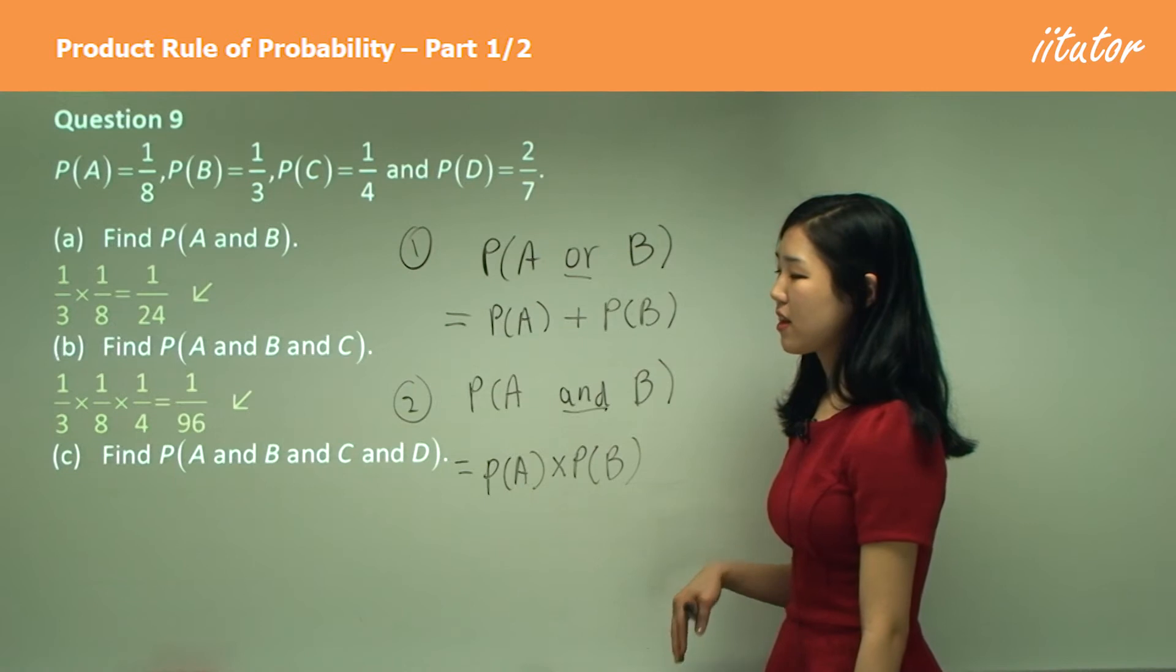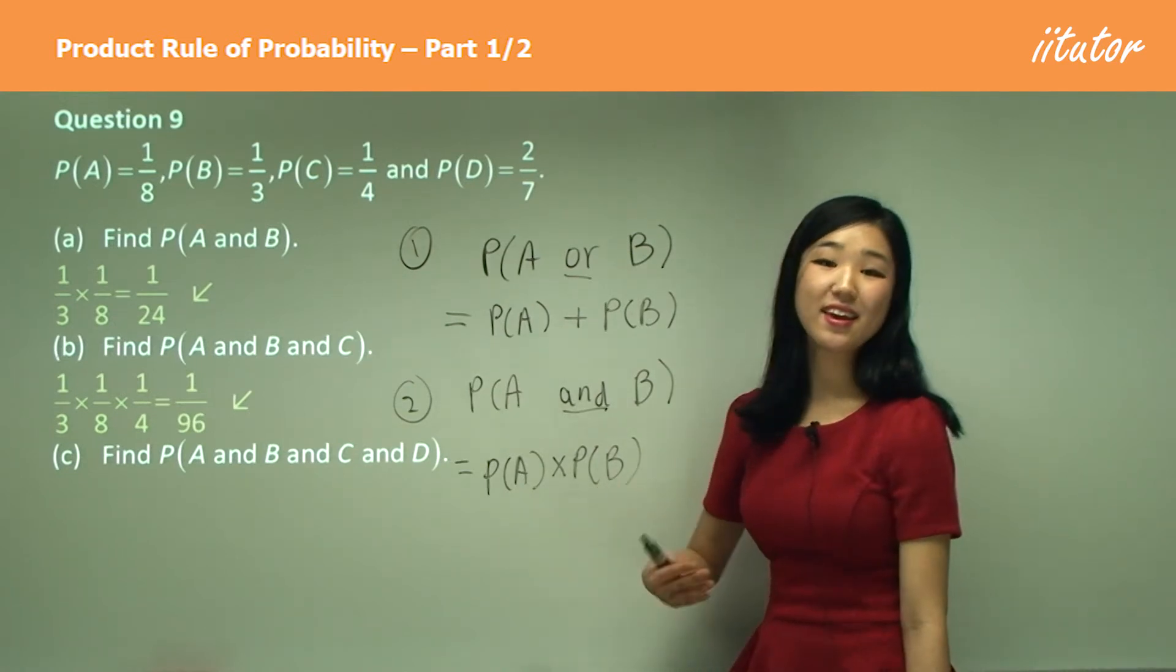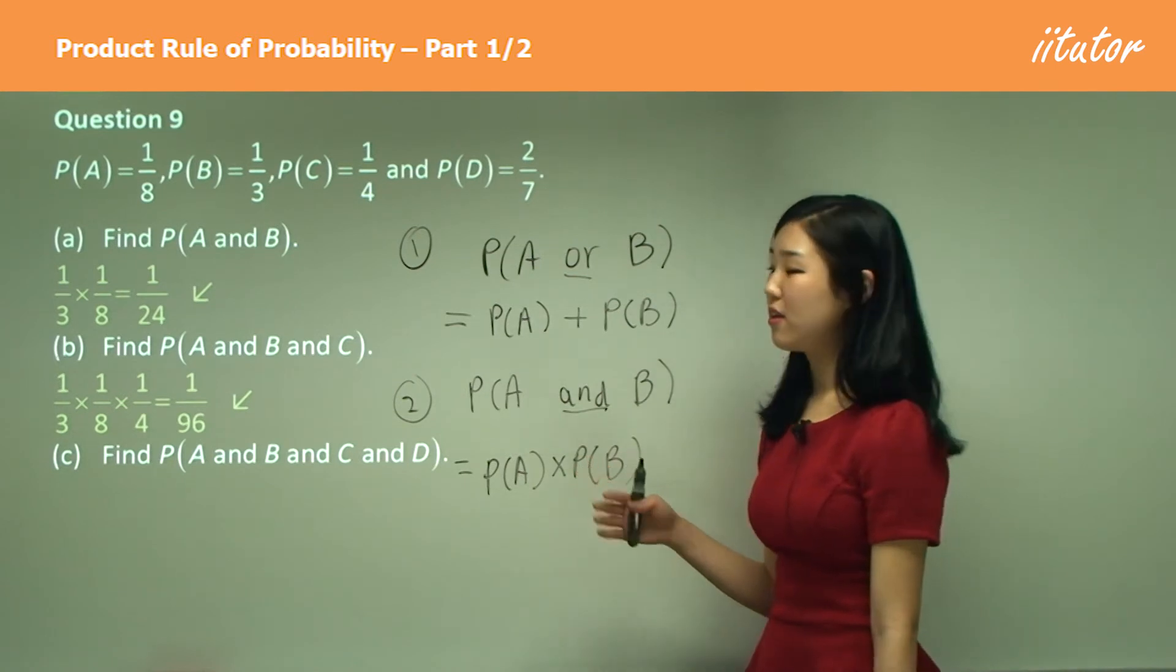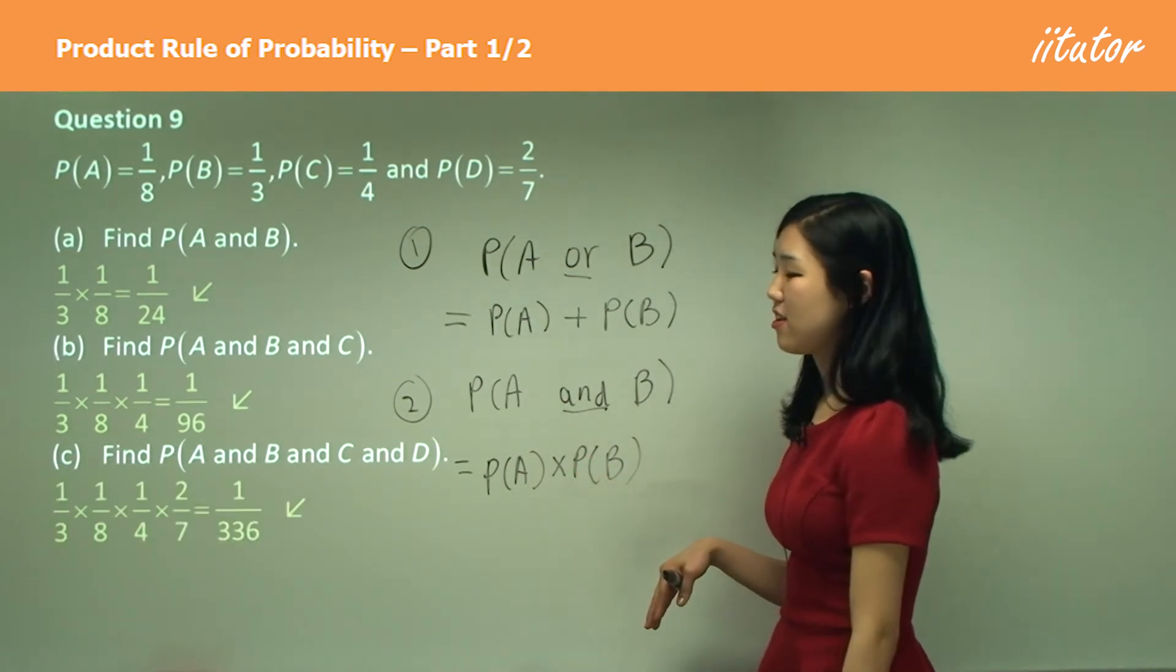And C, find the probability of A and B and C and D, it's all and, so you simply multiply them all. Just like this. And then you get that.